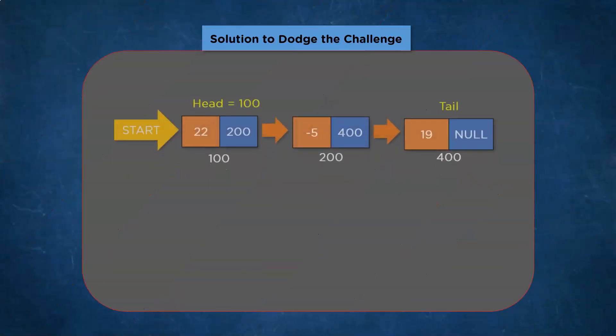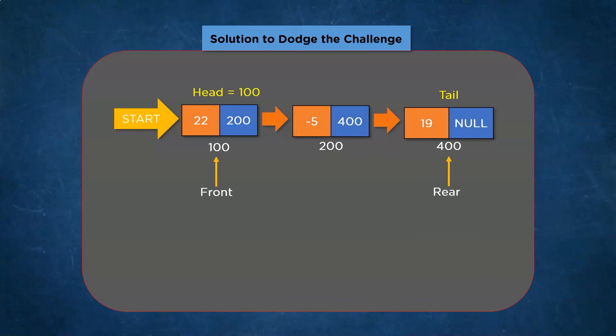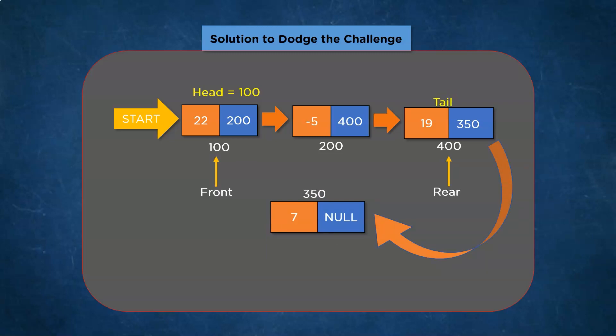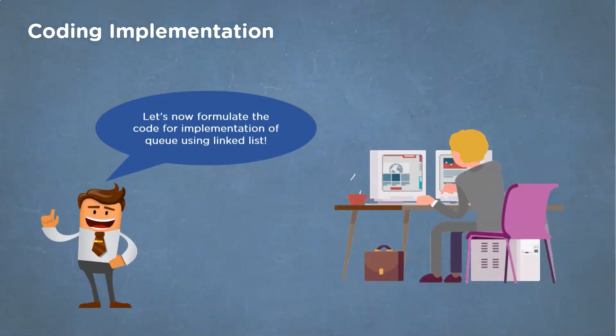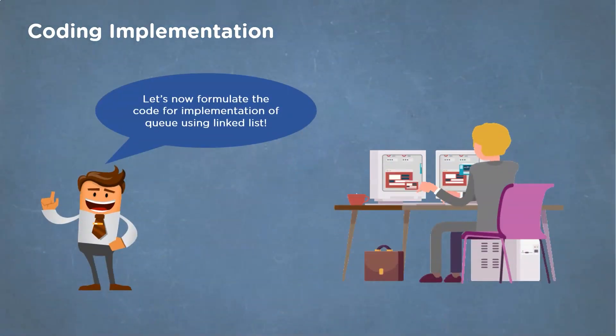Let's understand this with an example. Previously we were traversing from head to tail. But now, since we know the location of the tail node, there is no need for traversal. We can directly update the address part of the rear node to make a link for the new node. The new node with data element 7 is linked to the previous node, and the rear pointer is also updated to point toward the newly inserted node. Now the complexity for both operations will be O(1), so we can begin with the coding implementation of queue using a linked list.